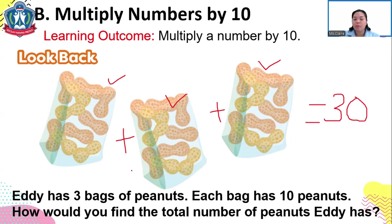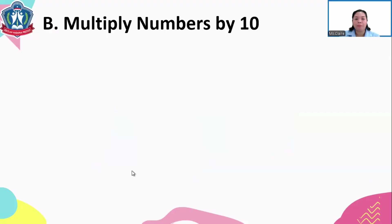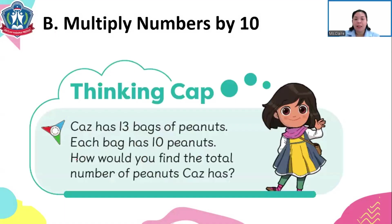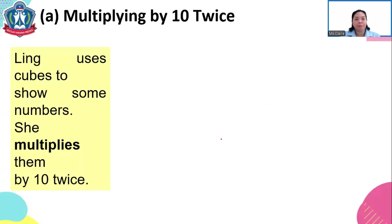That other way is by multiplying — multiplication — multiplying by 10. For our thinking cap: Cash has 13 bags of peanuts and each bag has 10 peanuts. How would you find the total number of peanuts Cash has? With 13 bags, it's difficult to add many numbers, so that's the use of multiplying by 10.